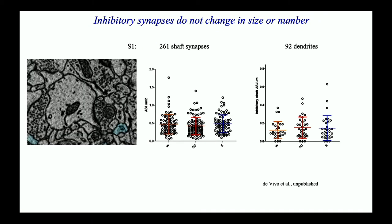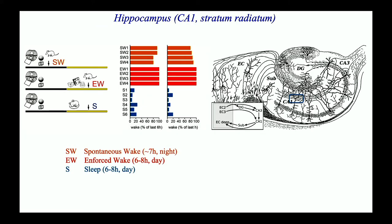Regarding inhibitory synapses — which takes even longer to study because there are fewer of them — so far we have no evidence of changes in size or number in the three conditions, in the same dendrites where we measure excitatory synapses. Now, the last thing we have done is the hippocampus. We asked whether we can see evidence for renormalization in this region so important for plasticity, learning, and memory.